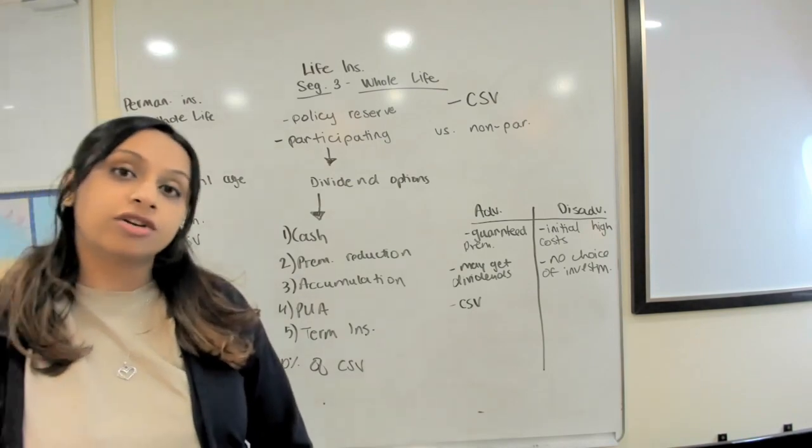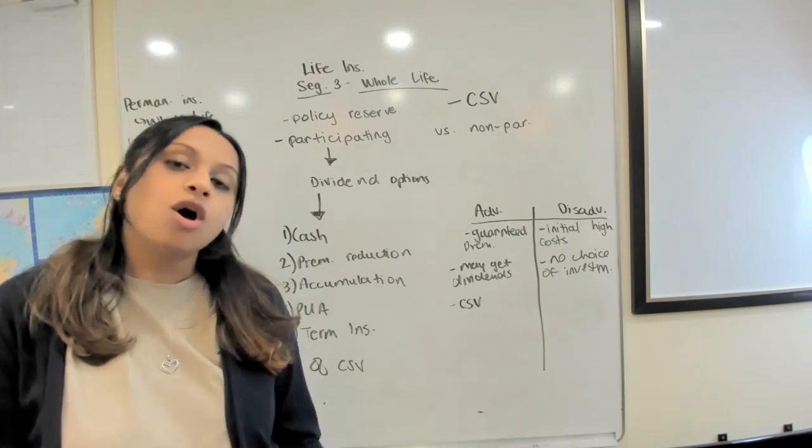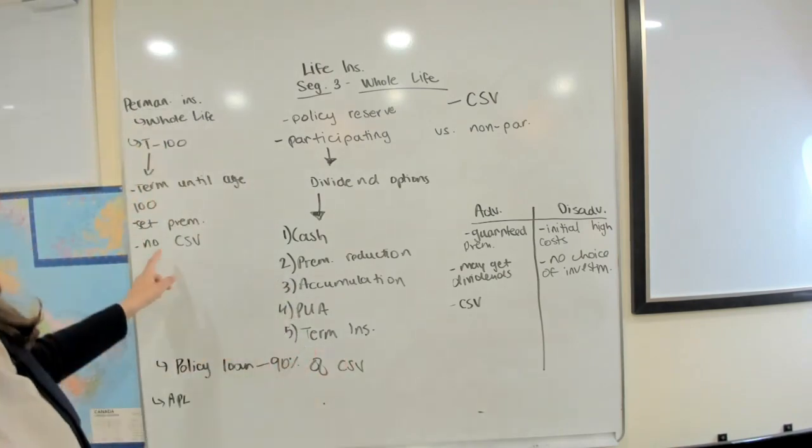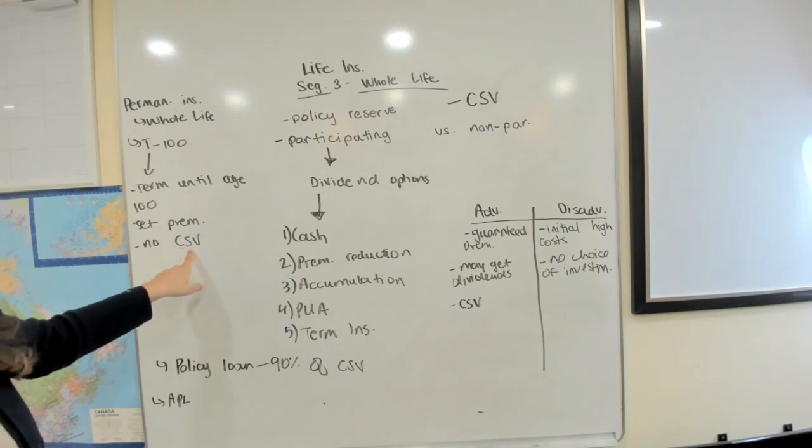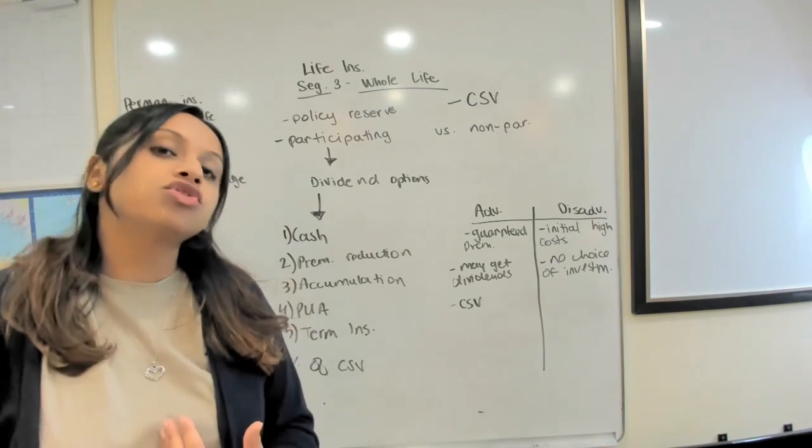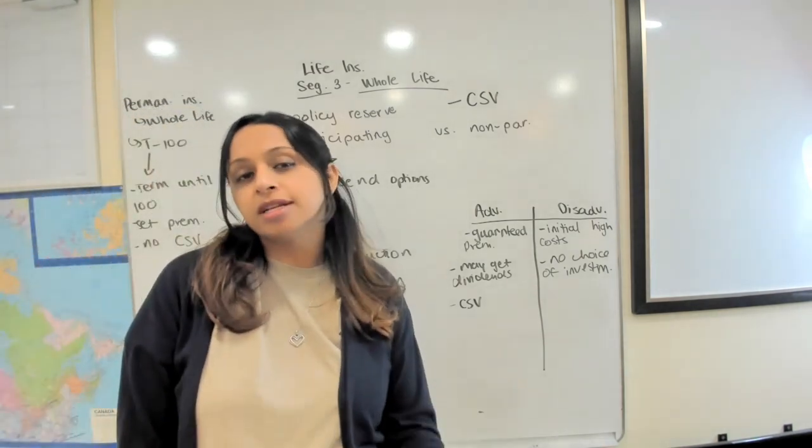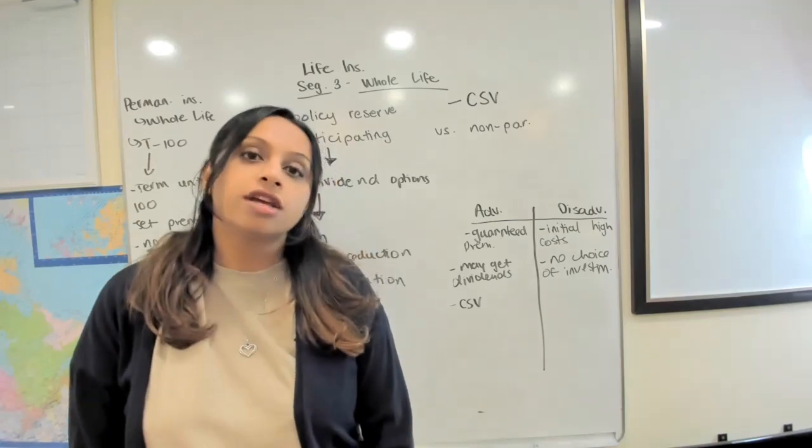So what's really the difference between term 100 and whole life? One of the biggest differences is that term does not have any CSV and that stands for cash surrender value. So this is for someone who's just looking for a cheap permanent life insurance product. They don't want any other options in their life insurance, they don't want any benefits of building a reserve in their insurance or doing anything else.